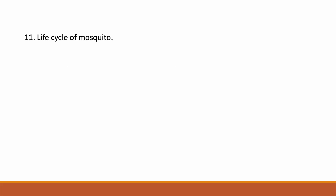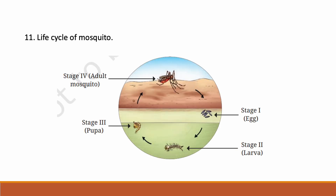Life cycle of a mosquito: there are four stages — Stage 1: Egg, Stage 2: Larvae, Stage 3: Pupae, Stage 4: Adult mosquito.